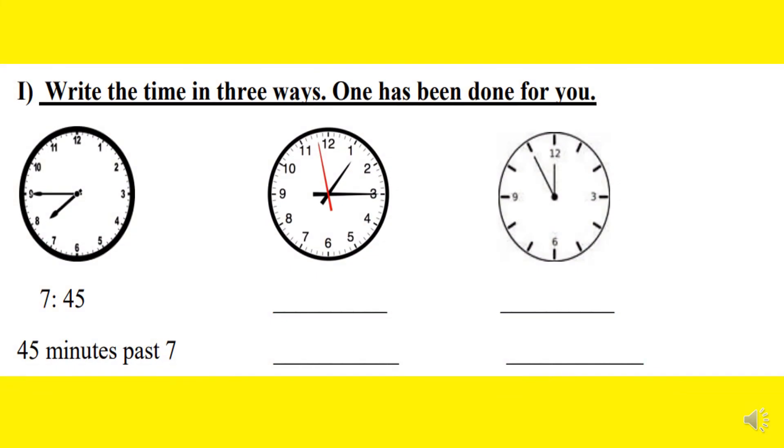Question number 1: Write the time and read this. One has been done for you. Dear children, in this picture there are three clocks shown with different timings. We have to read the timing shown in the clocks and say it in different ways.